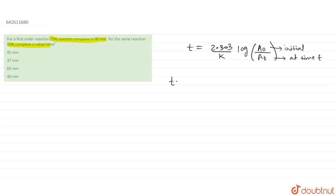First I'm writing about t₇₅%. They said t₇₅% completes in 90 minutes. Log A₀, initial will be 100%, so we'll be writing 100. And at time t, how many will be left? It will be 25 because 75% is already completed. So this is our equation number 1.